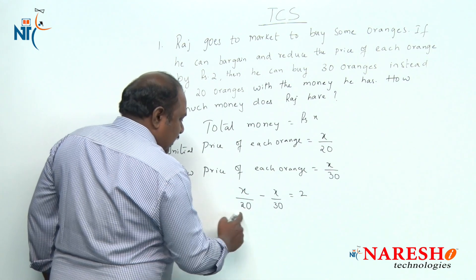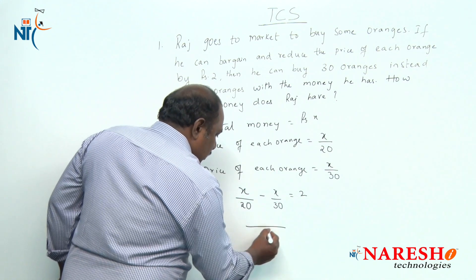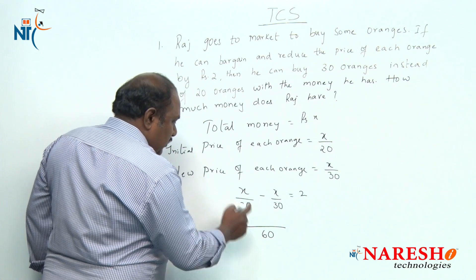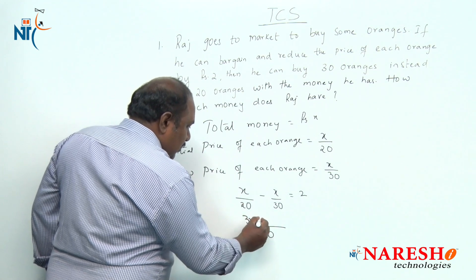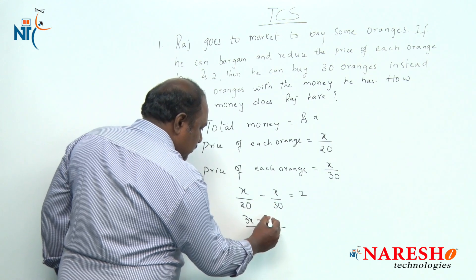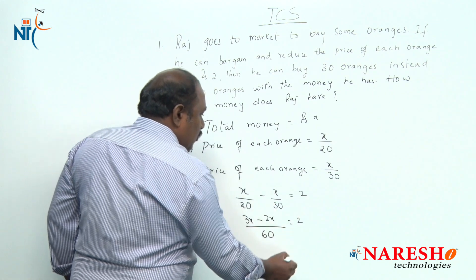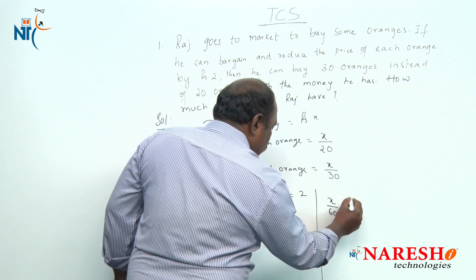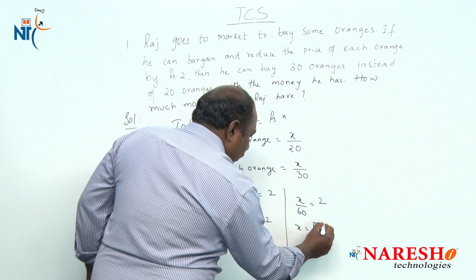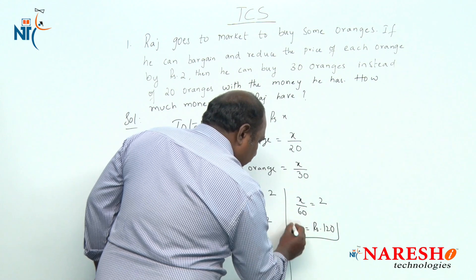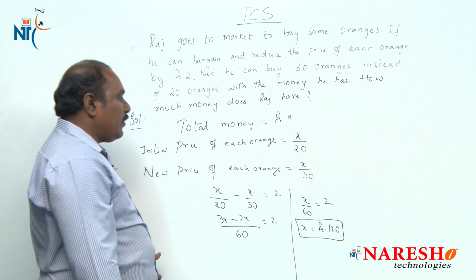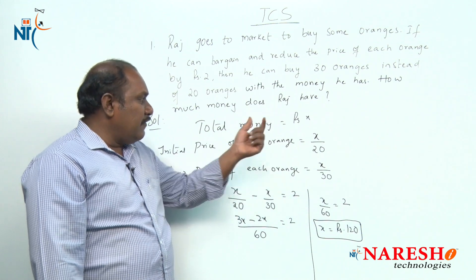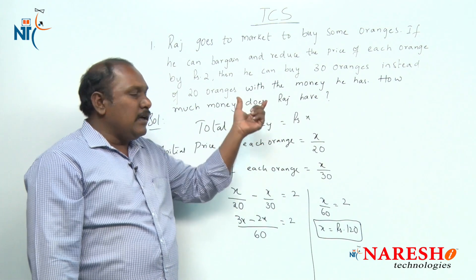Taking the LCM of 20 and 30, which is 60: (x/20) minus (x/30) equals 2, giving (3x minus 2x) divided by 60 equals 2, so x divided by 60 equals 2, and x equals 120. So the money Raj has is 120 rupees. This is the second way of solving the problem by using the variable x for the total money Raj has.